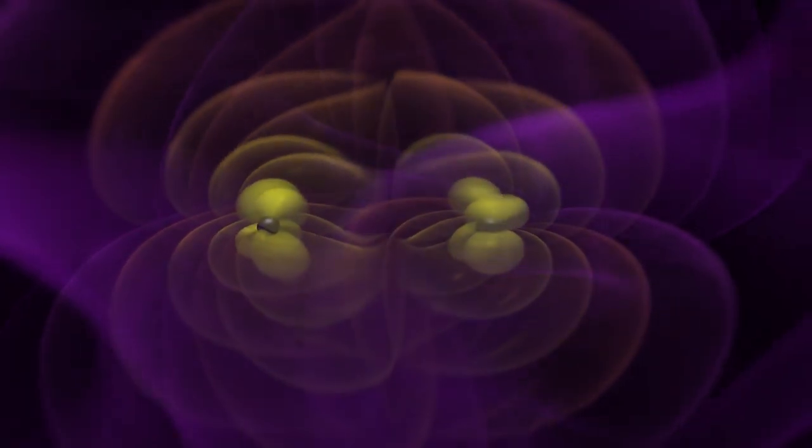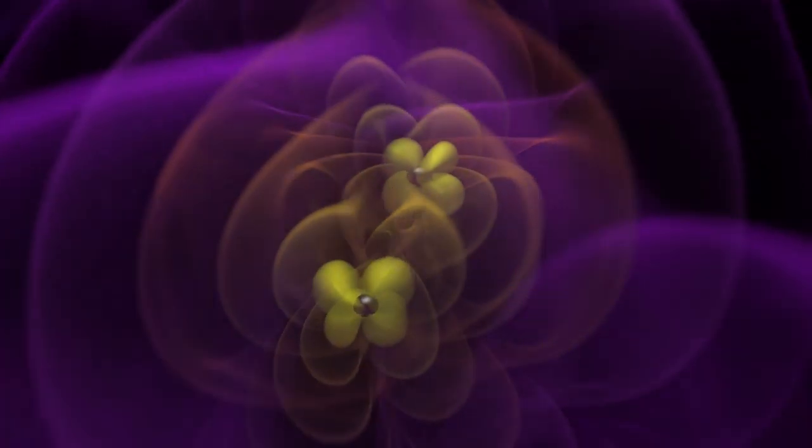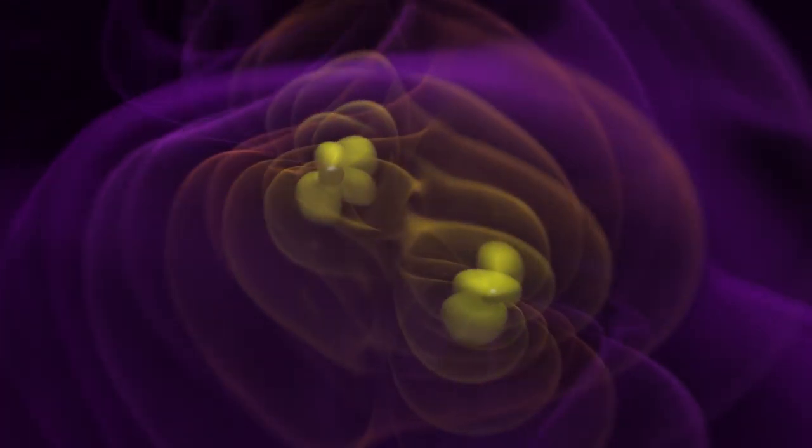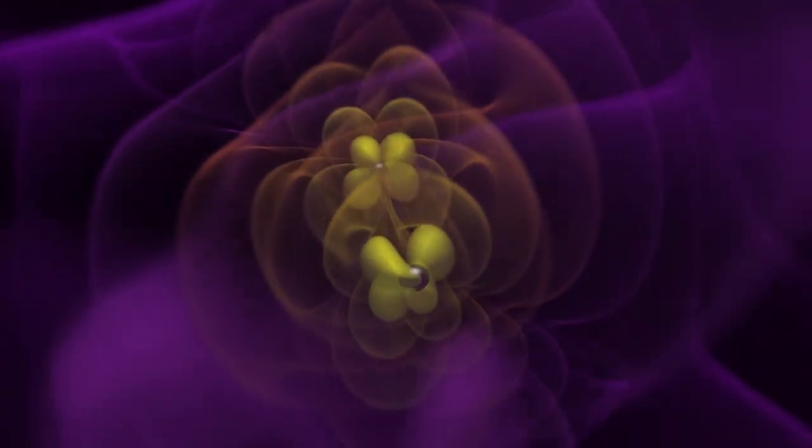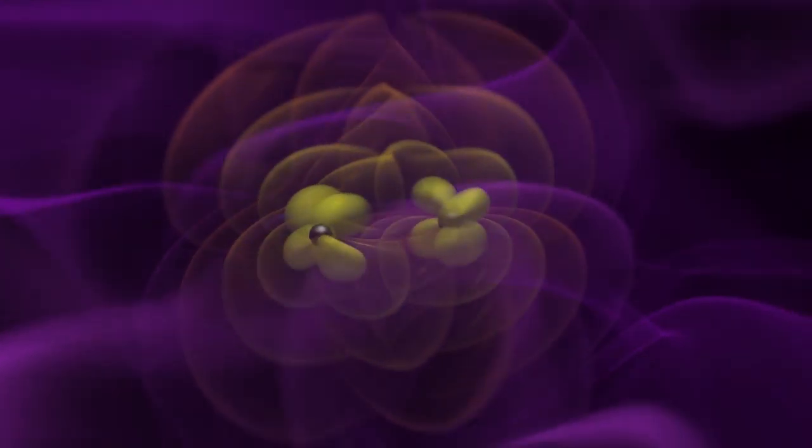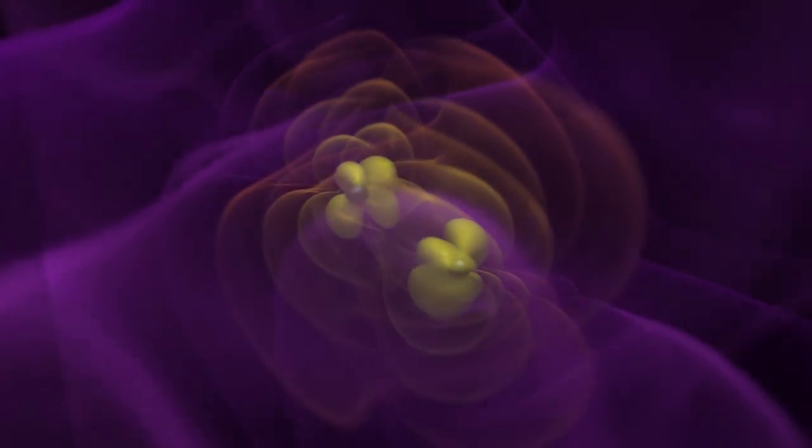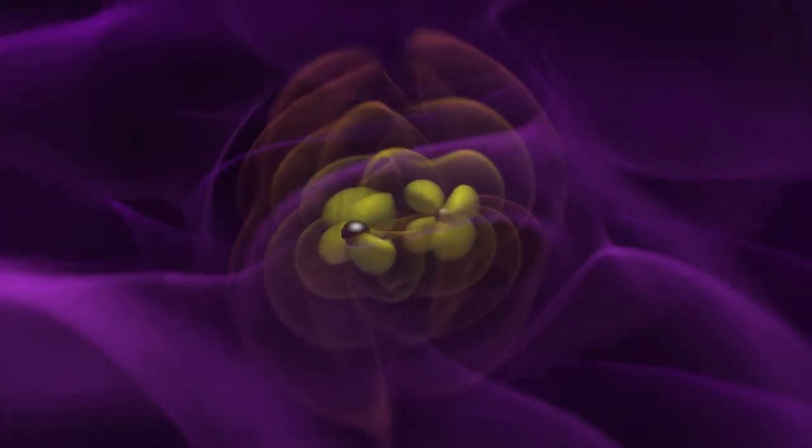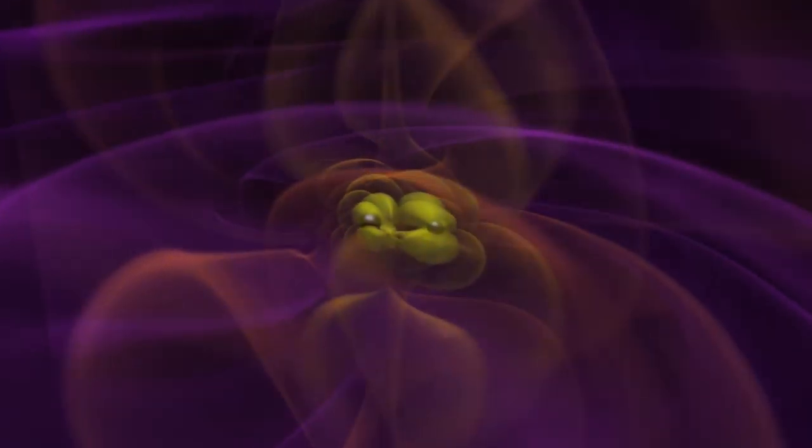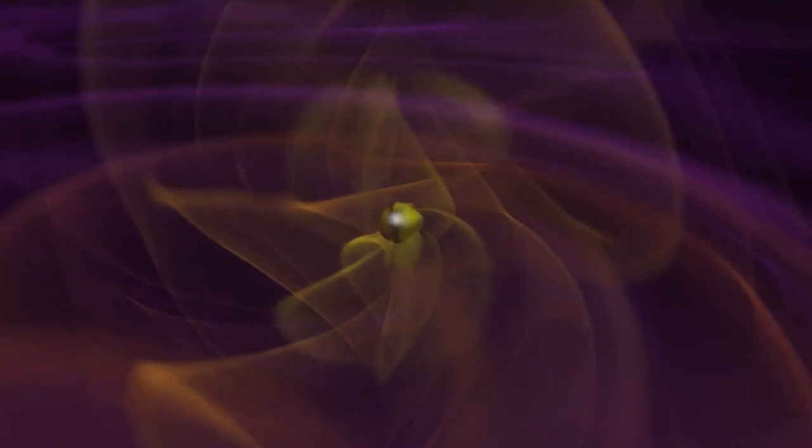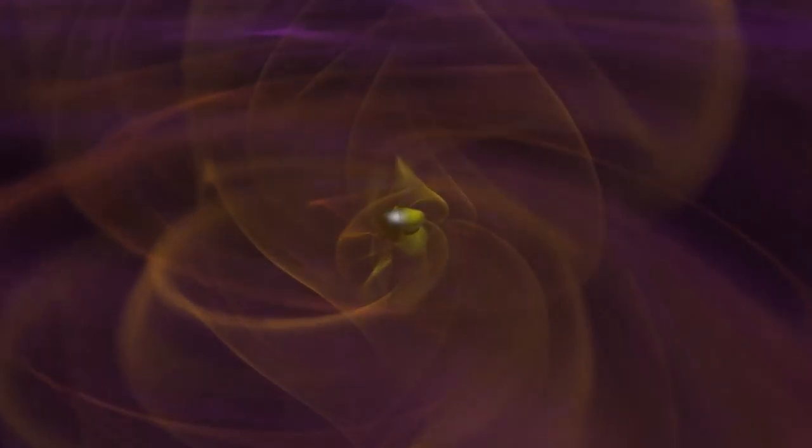The energy release from a binary black hole merger in ringdown makes a supernova look like a firecracker. Ringdown occurs when two black holes merge and begin to settle down to a stable form, where any distortion in the shape is dissipated as gravitational waves. In the final fraction of a second the black holes can reach extremely high velocity, and the gravitational wave amplitude reaches its peak.